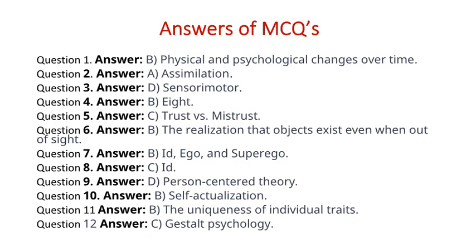Question 7 Answer B — ID, ego, and superego. Question 8 Answer C — ID. Question 9 Answer D — Person-centered theory. Question 10 Answer B — Self-actualization. Question 11 Answer B — The uniqueness of individual traits. Question 12 Answer C — Gestalt psychology.